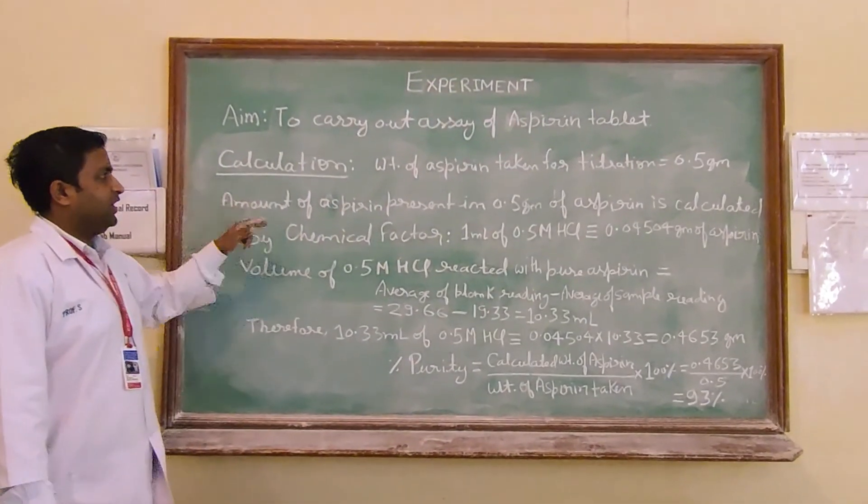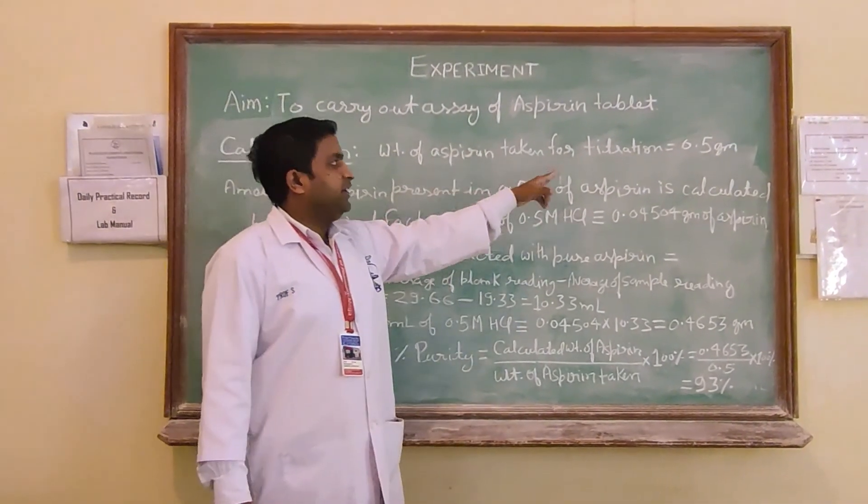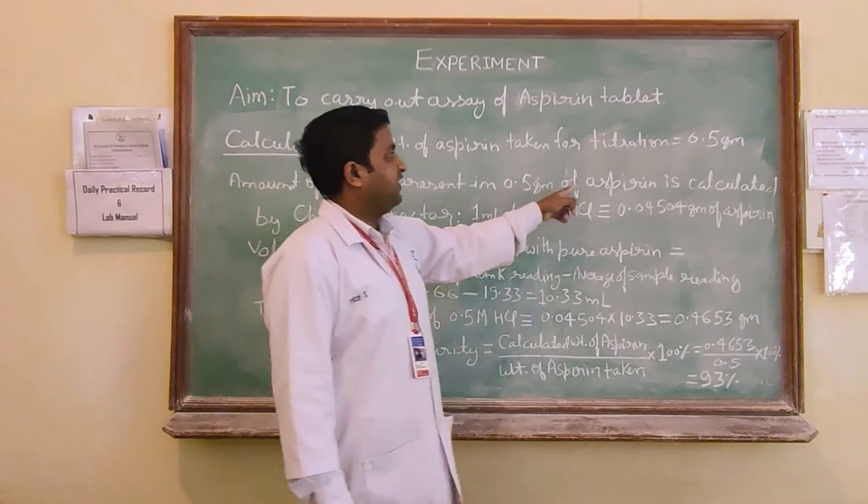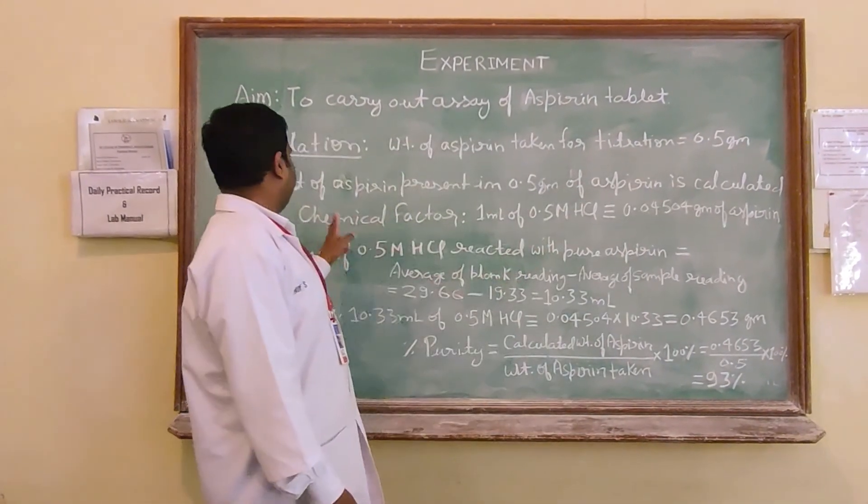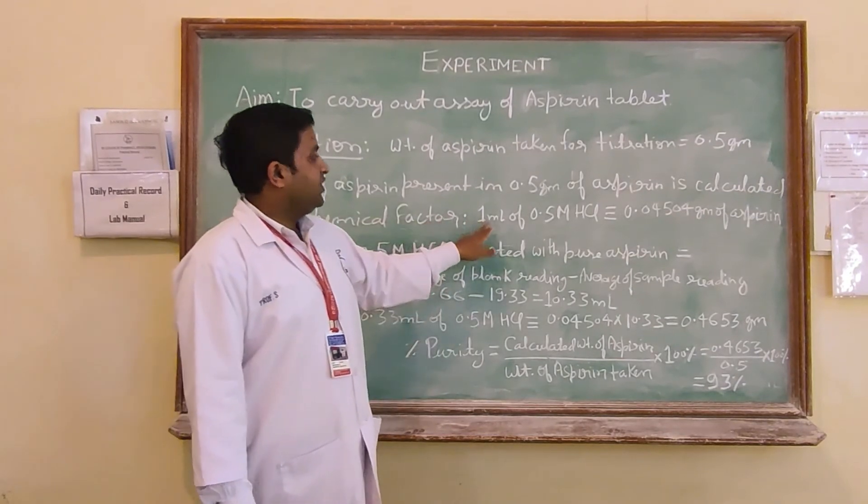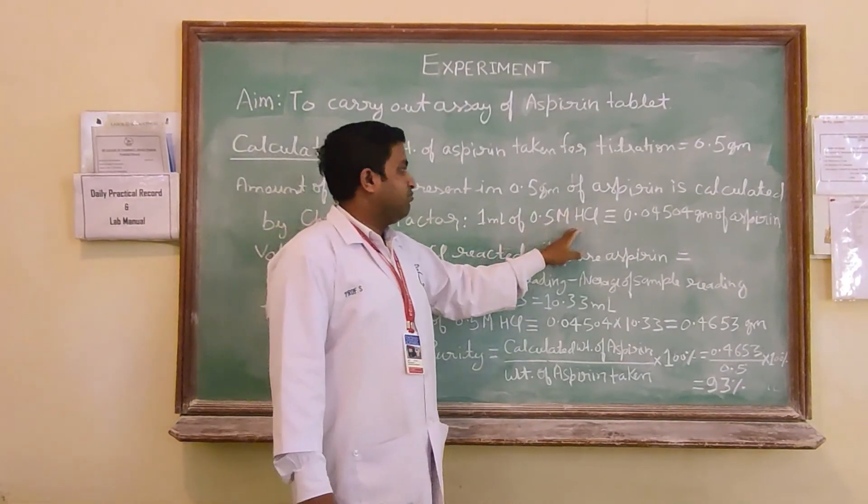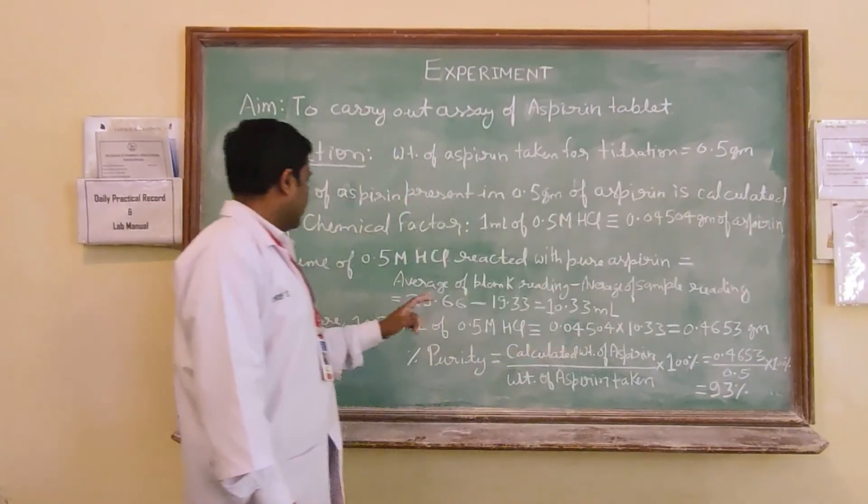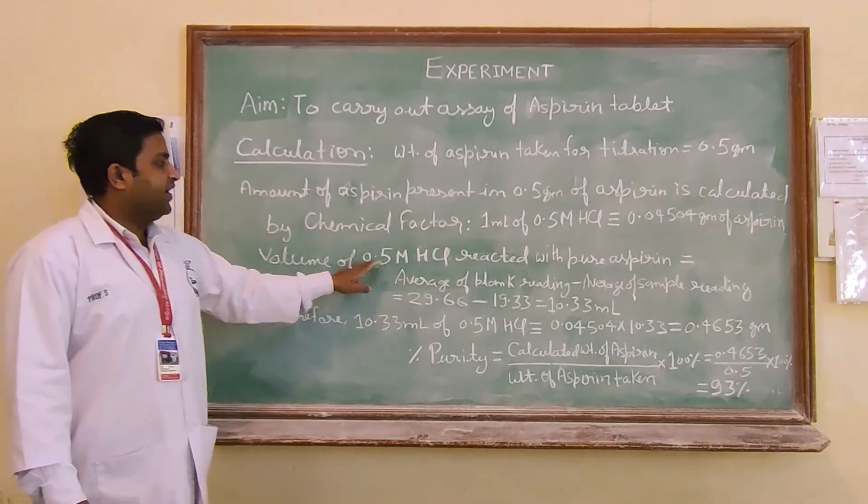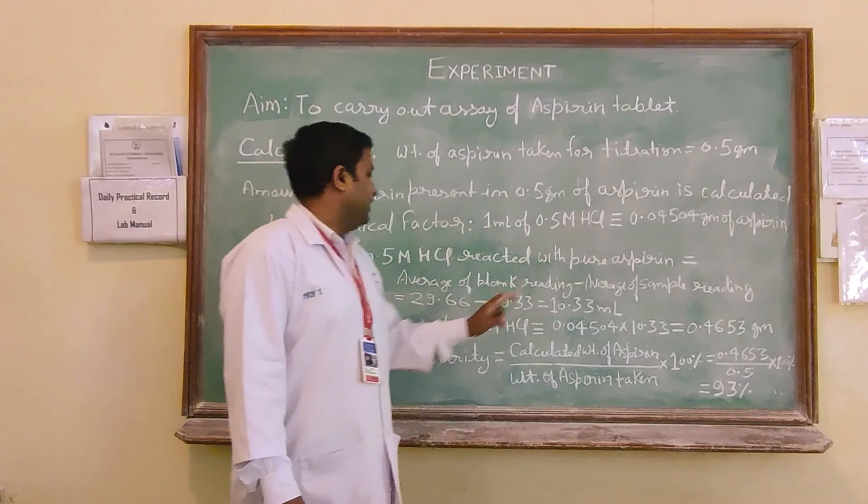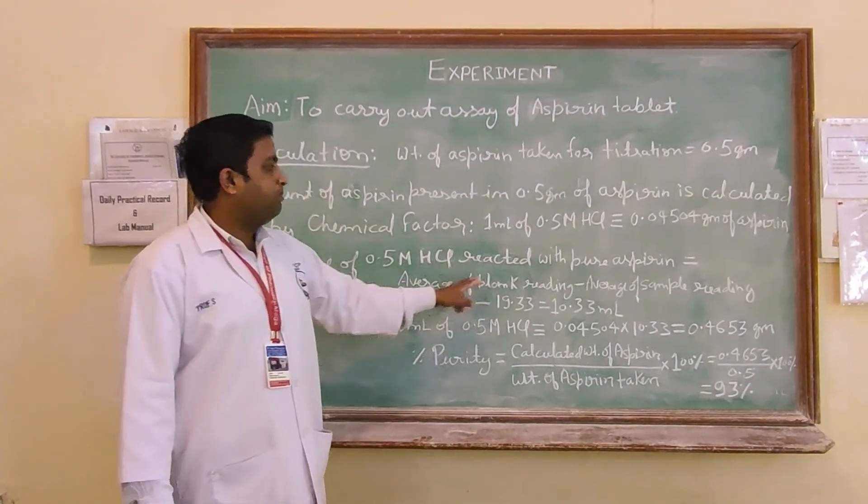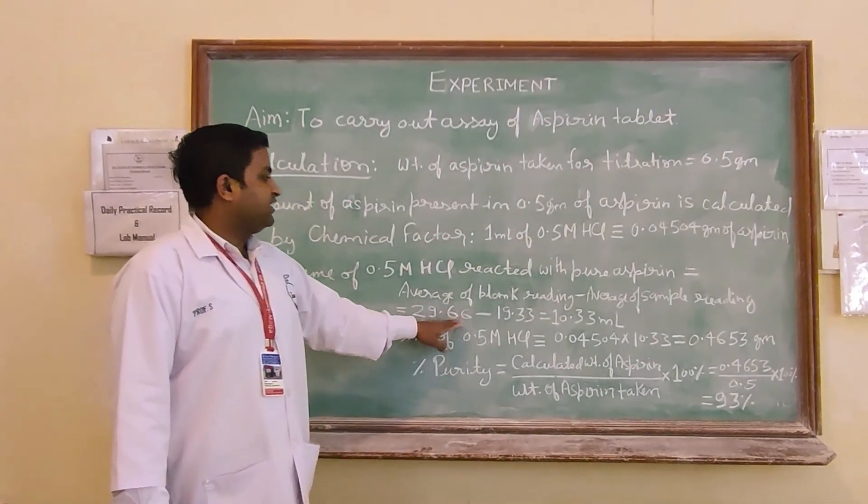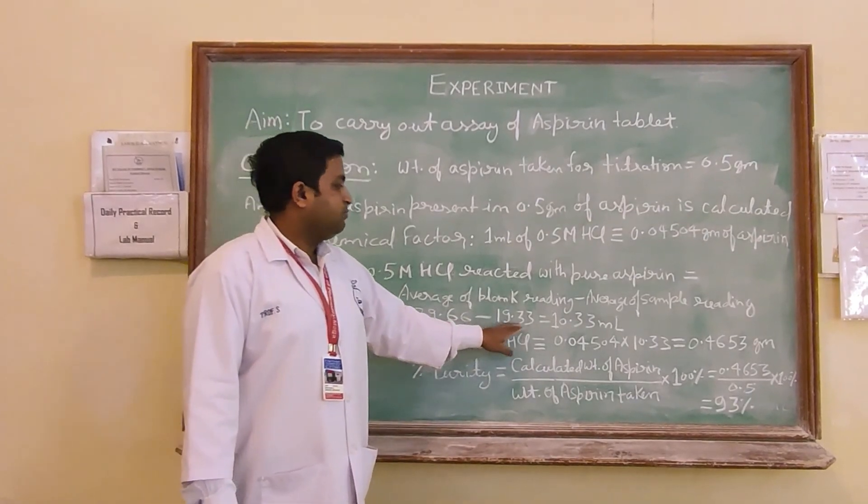Now comes to the calculation part. Weight of aspirin taken for the titration was 0.5 gram. Amount of aspirin present in 0.5 gram of aspirin is calculated by the chemical factor which is 1 ml of 0.5 molar NaOH is equivalent to 0.04504 gram of aspirin. Volume of 0.5 molar HCl reacted with pure aspirin will be average of blank reading minus average of sample reading. That is 29.66 ml minus 19.33 ml, it will be 10.33 ml.